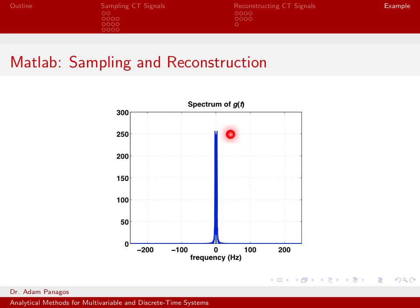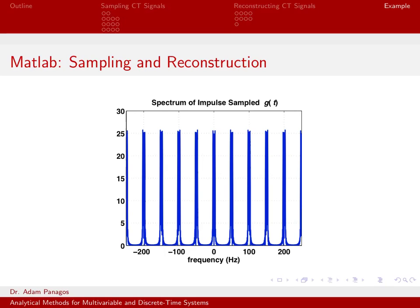The important part here is we know what happens when we sample G of T. When we sample G of T, this spectrum is going to get repeated up and down the frequency axis at multiples of our sampling rate. That is exactly what happens. Here is the spectrum of the impulse sampled signal, G of T. So I'm sampling here obviously at a frequency of 50 hertz because this original spectrum is getting replicated in multiples of 50 all up and down the frequency axis.